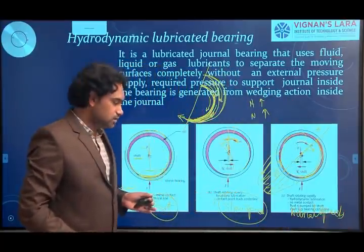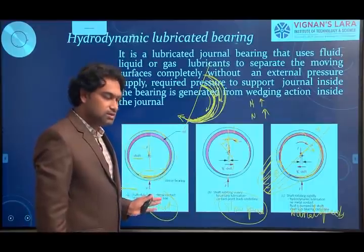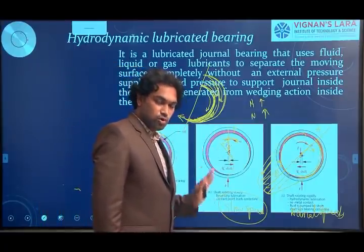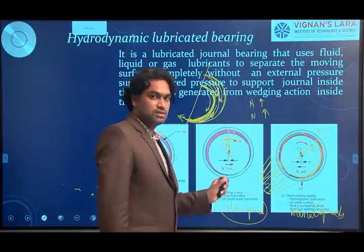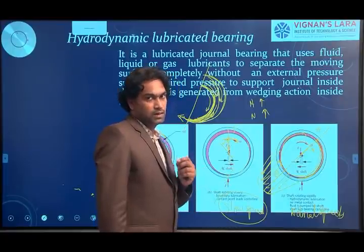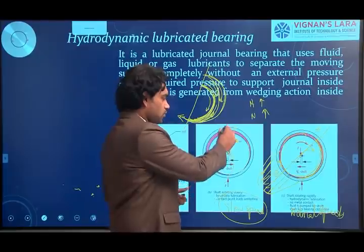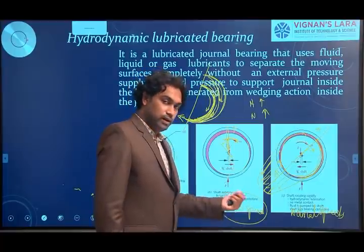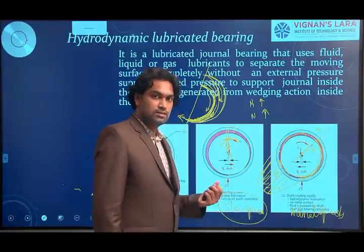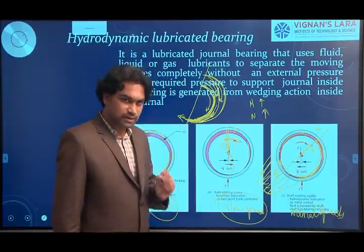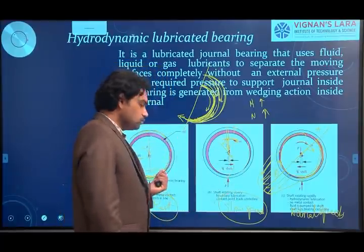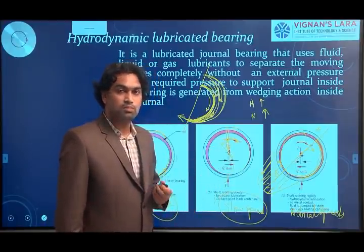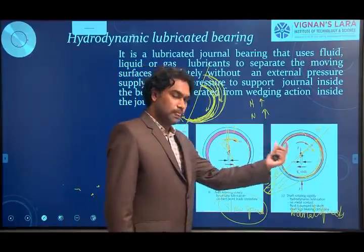To summarize the three conditions: initially when the shaft is at rest, there is direct metal-to-metal contact and high friction. The second condition — at slow speed — even though a layer of lubricant is present, the force acting on the shaft breaks the thin layer, resulting in partial metal-to-metal contact. This is the boundary layer lubrication condition, where metal friction is present but at a comparatively lower amount than at rest.